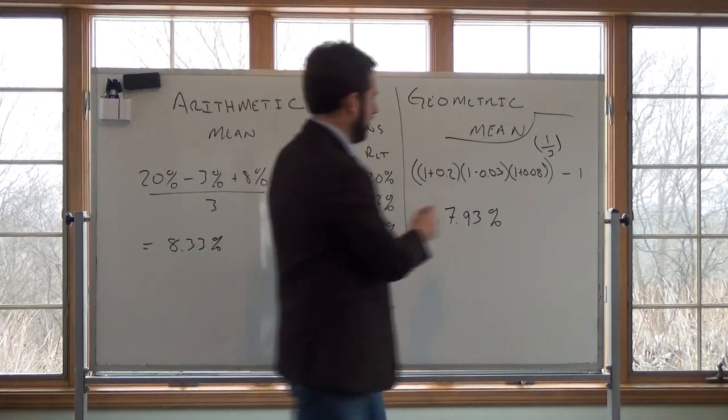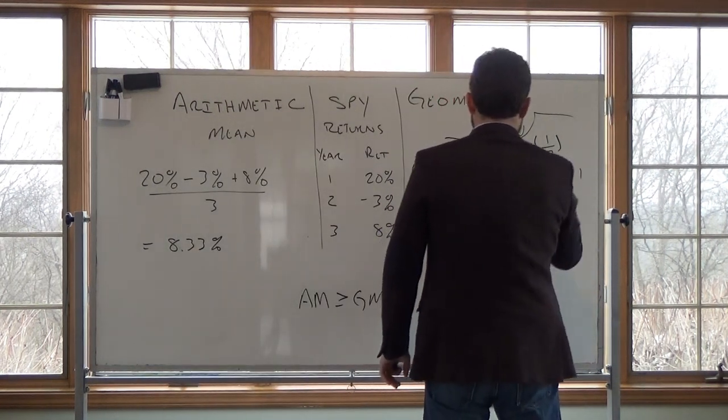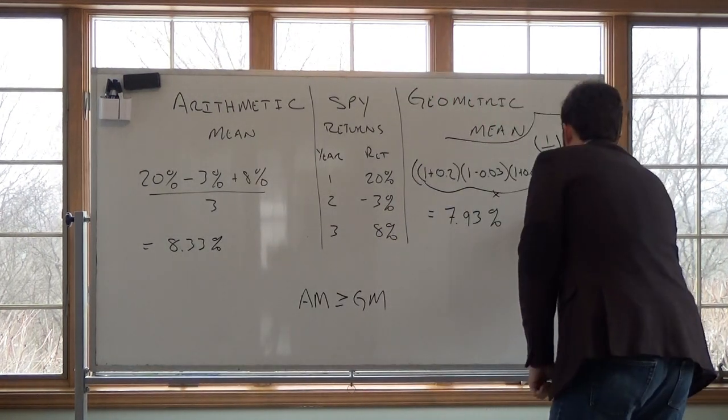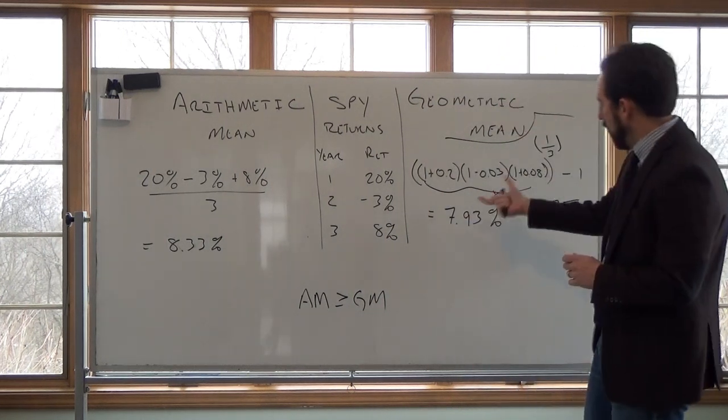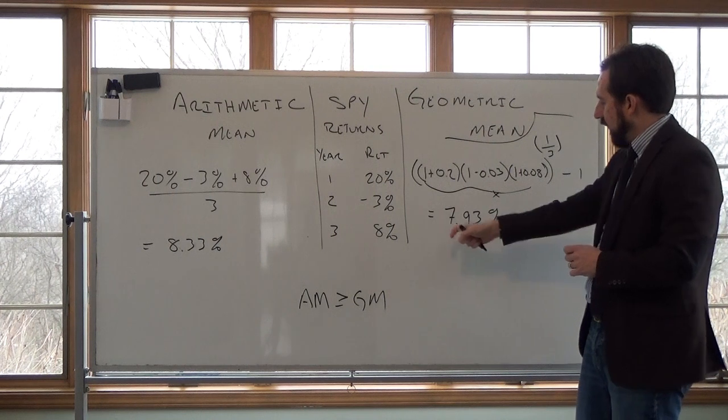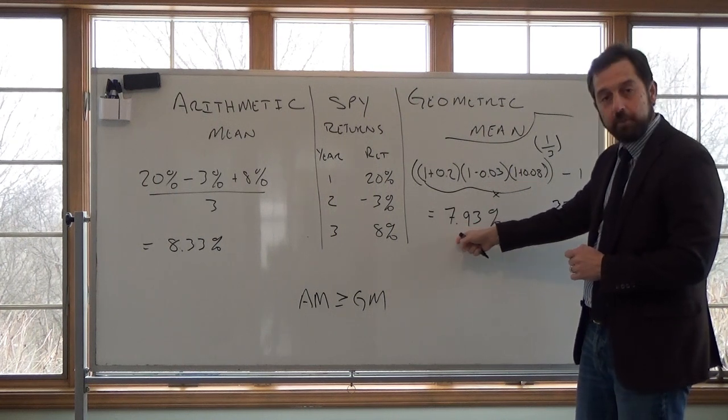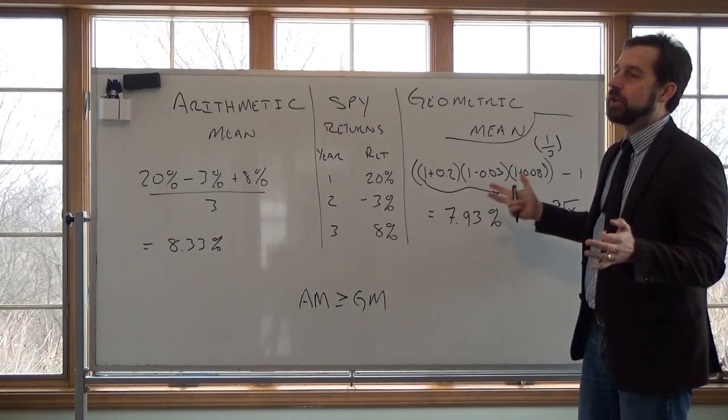Of course, if this number here is X, then this is just the cube root of X. It's another way to write the same thing. So if I take the cube root of this, I get an annual return of 7.93%. So when do I use this mean?